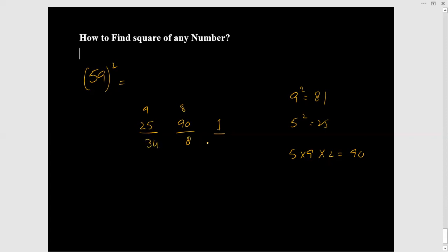So 59 squared equals 3481. Easy, right? Don't forget to subscribe to Prep Lab channel. We will share a lot of shortcuts and tricks that will definitely help you. Thank you.